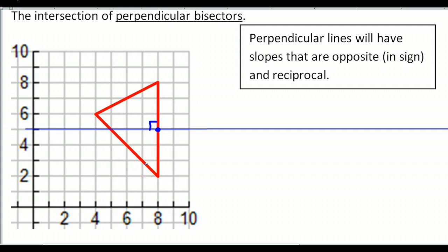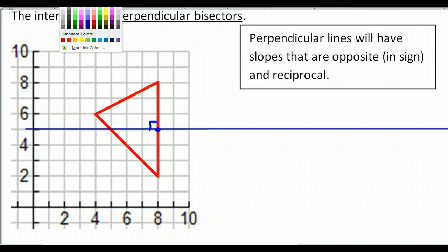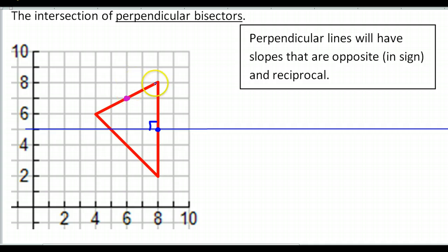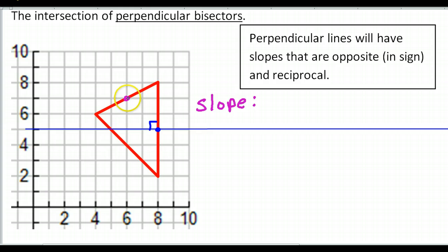Now let's go ahead and draw another perpendicular bisector. I'm going to do both sides just for practice. Looking at this side up here, the midpoint is obviously right here — up one over two, up one over two, this is in the middle. The original slope is up 1, right 2 — so one half. A perpendicular line will have a slope that is opposite and reciprocal.